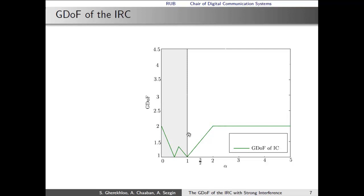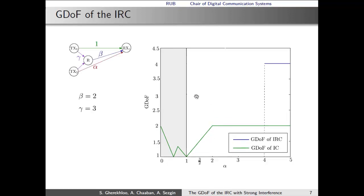Here we have again the GDoF of the interference channel. For convenience, I have drawn a part of the setup such that we do not have to memorize which links were associated to alpha, gamma, and beta. For example, we consider here in this presentation, we assume that beta is equal to 2 and gamma is equal to 3.